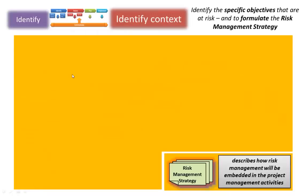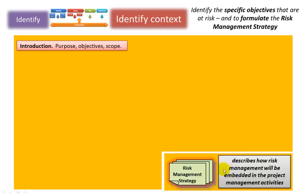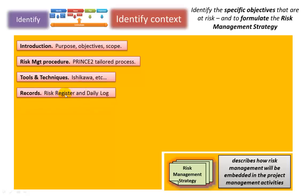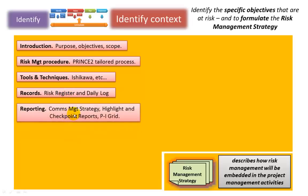Let's go through these in detail, starting with the identify step — identify context. What we're doing here is identifying the specific objectives that are at risk and formulating the risk management strategy. This document describes how risk management will be embedded in the project management activities. Looking at the risk management strategy, it starts with the introduction, purpose, objectives and scope, the PRINCE2 procedure being used and tailored for this particular project, and any particular tools and techniques to be used. The records will be the risk register and the daily log, which is used throughout the project if any risks need to be managed informally rather than transferring them to the risk register.